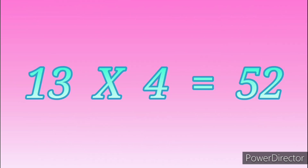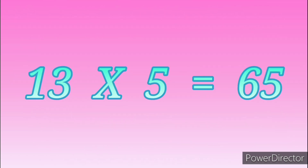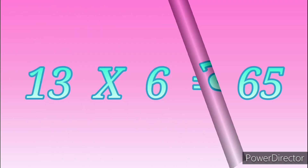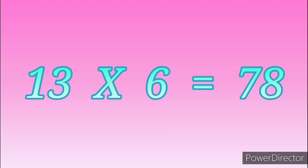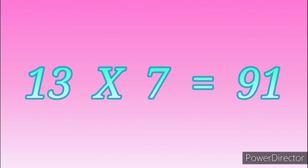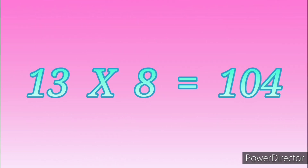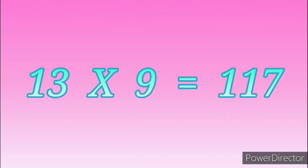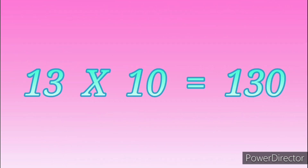13 fours are 52. 13 fives are 65. 13 sixes are 78. 13 sevens are 91. 13 eights are 104. 13 nines are 117. 13 tens are 130.